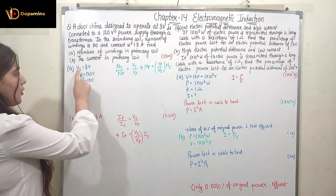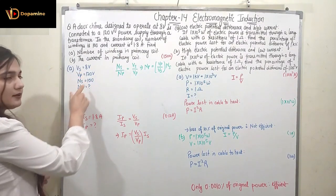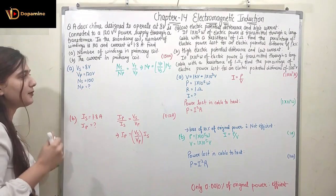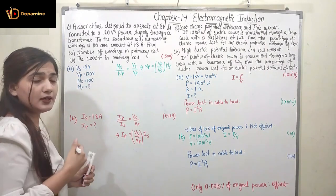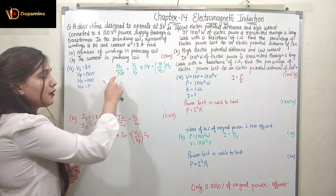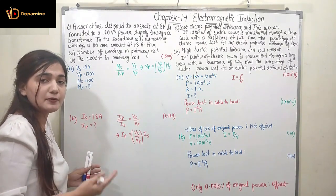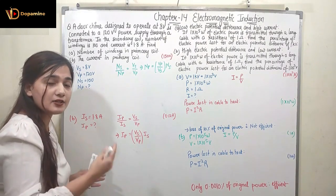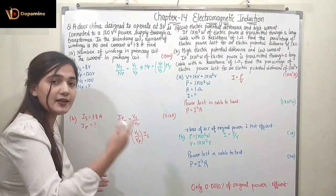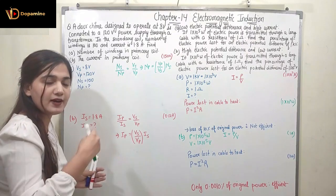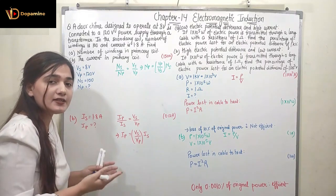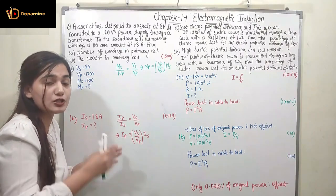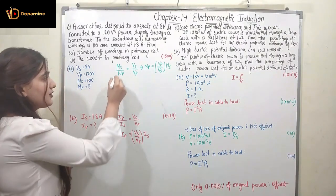First of all, we know Vs, Vp, and Ns. The voltage at the primary is directly proportional to the number of turns. If there are more turns at the secondary, there is more voltage; fewer turns means a voltage drop. So voltage is directly proportional to the number of turns.